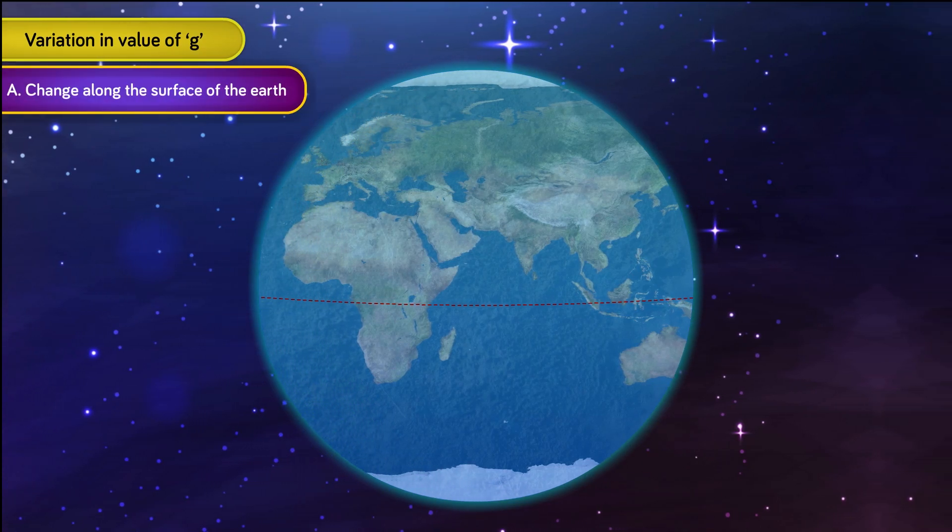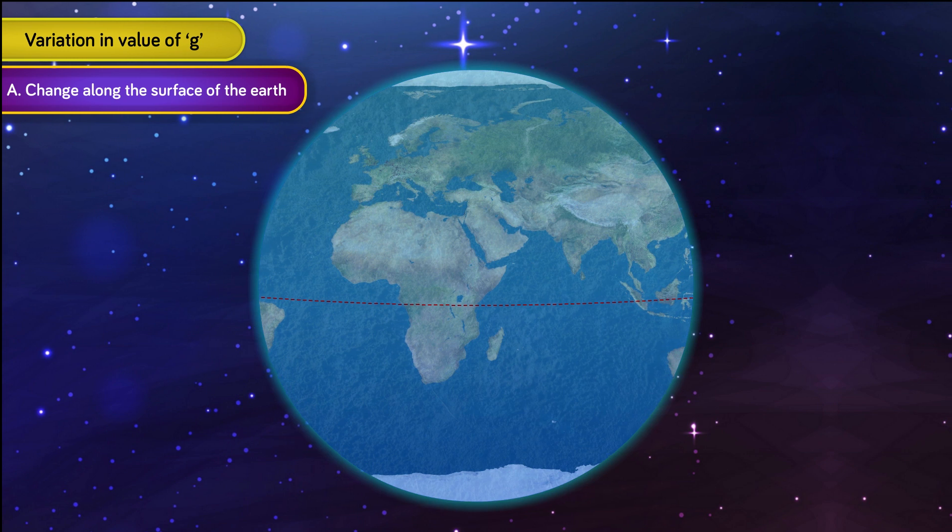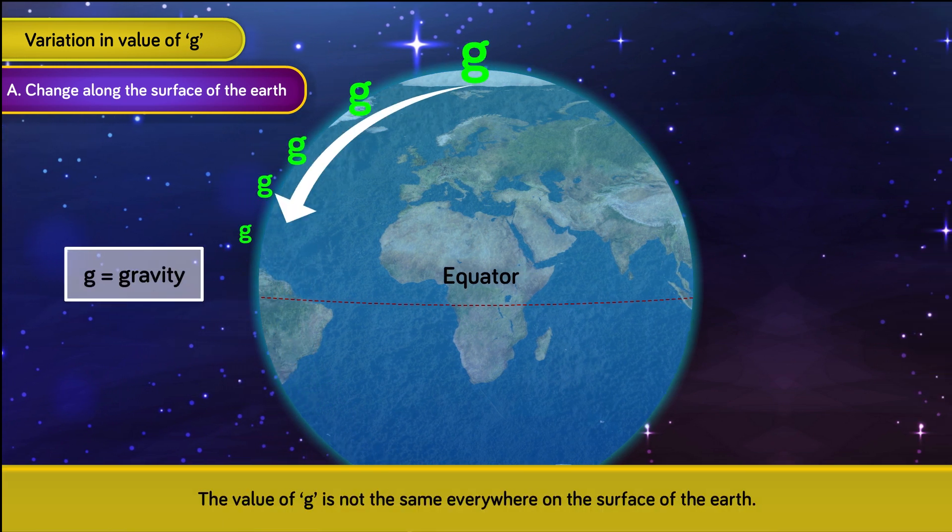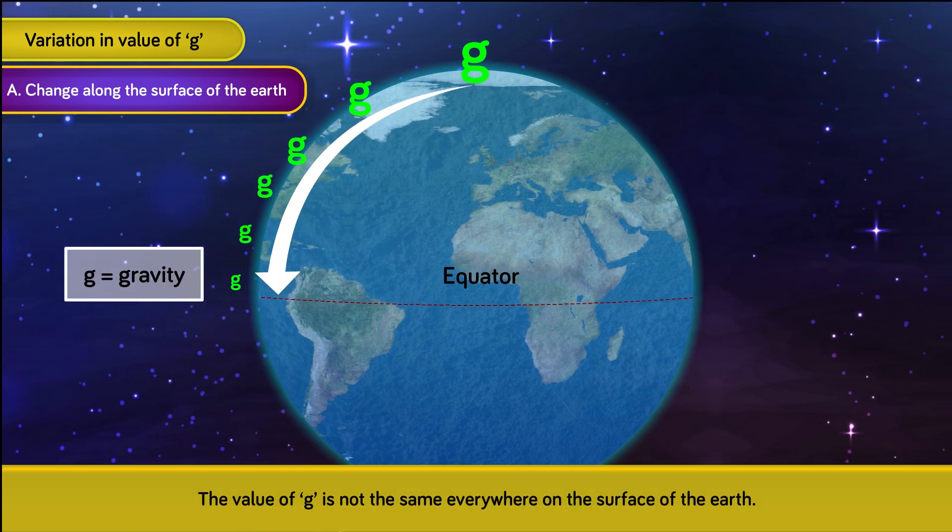Point A. Change along the surface of the Earth. The value of g is not the same everywhere on the surface of the Earth.